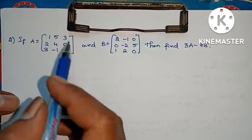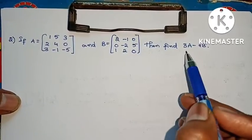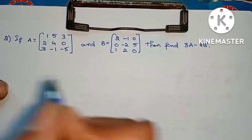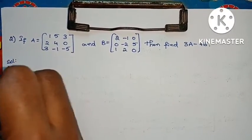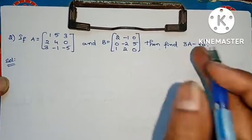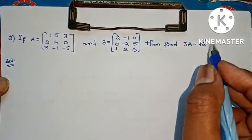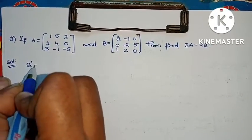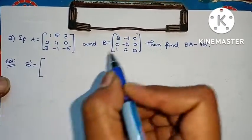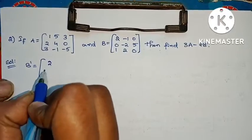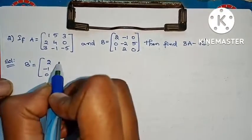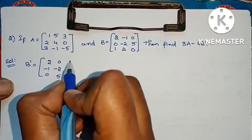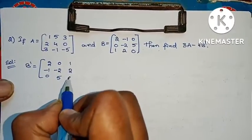If A equals to this matrix and B equals to this matrix, then find 3A minus 4B transpose.